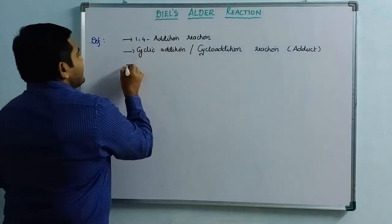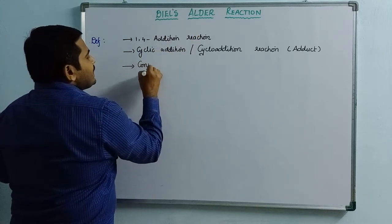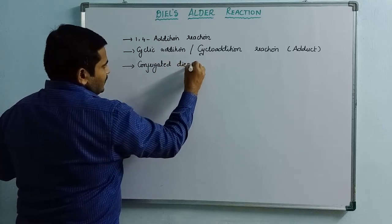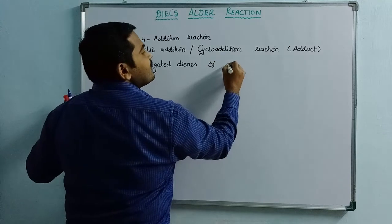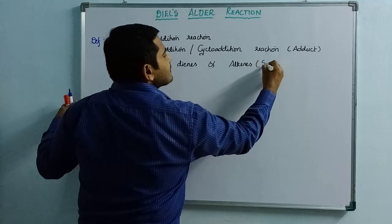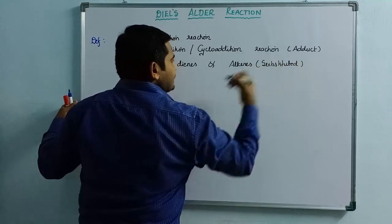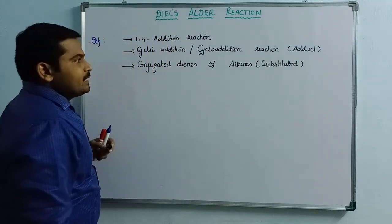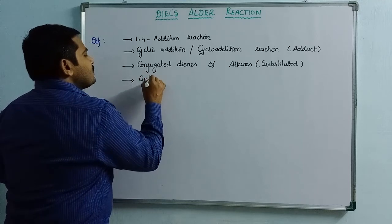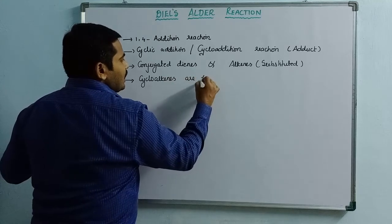So what does this reaction actually mean? It is a reaction between conjugated dienes and alkenes or substituted alkenes. In this cycloaddition reaction, cycloalkenes are formed.